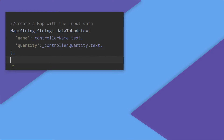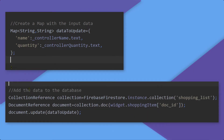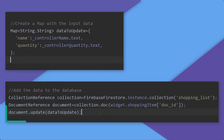First of all, you have to create a map containing the data to be updated. Then you have to get an instance of the document that you want to update. For that, first get the reference of the collection — an instance of the collection reference. Then get the reference of the document, an instance of the class DocumentReference. Then call the function update on this DocumentReference, passing the map containing the data to be updated.